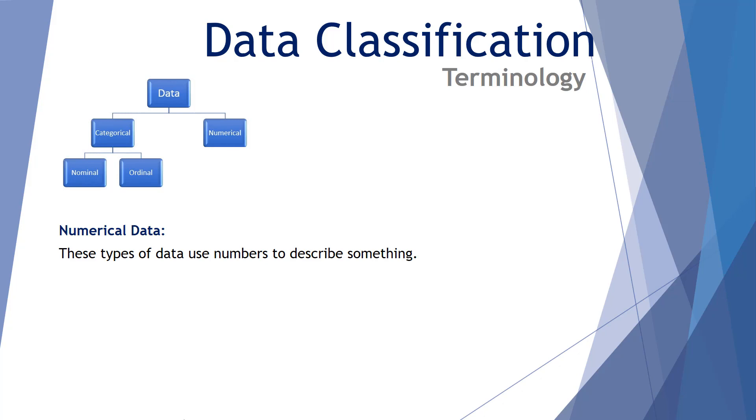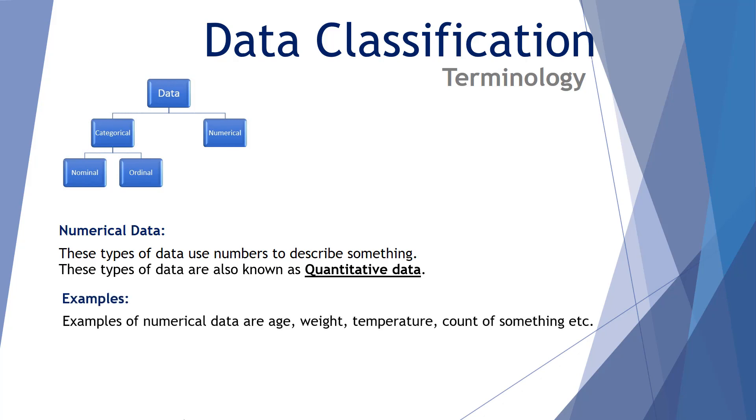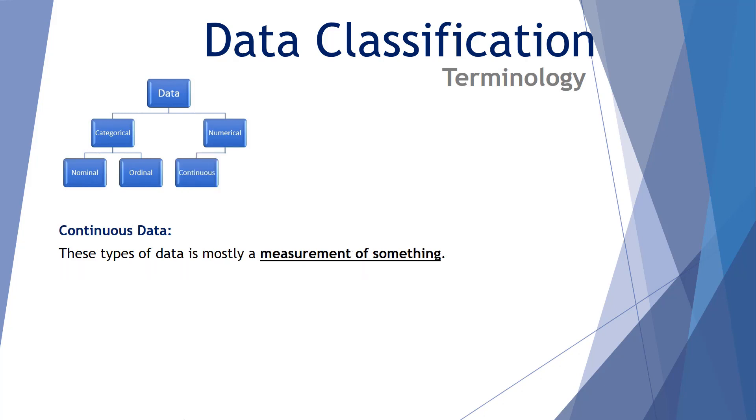The alternative data to categorical data is numerical data. These types of data use numbers to describe something. Also known as quantitative data because it involves quantities. Examples of numerical data could include age, weight, temperature, and the counting of something. Just like categorical, numerical data has its own subclassifications.